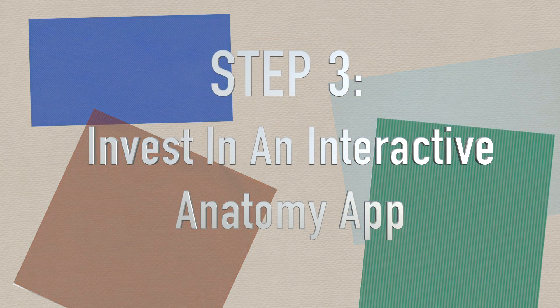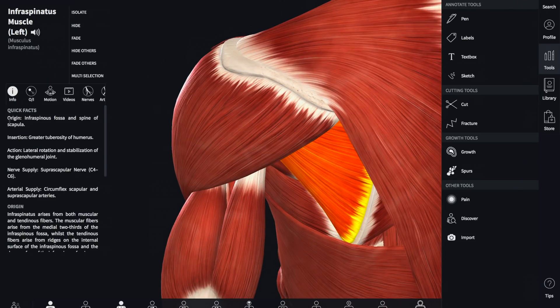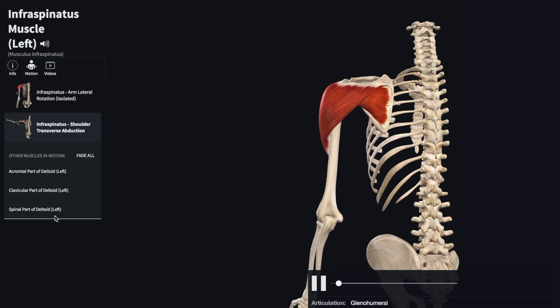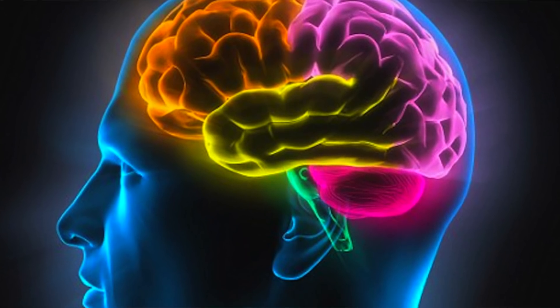This leads us to step three: invest in a good anatomy app that is interactive and allows you to click on the muscles for identification purposes, to gain more information about the muscle and ideally to see the action of the muscle. We think in pictures — when I say 'the mind,' a brain pops in your head, right? But the mind is not a brain; we've just associated a picture of a brain with the word 'mind.' So by attaching a picture to the various muscles, you are able to remember them better, and most likely you'll remember the insertions and origins of these muscles.